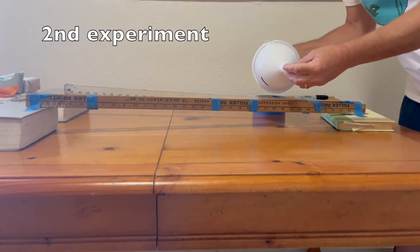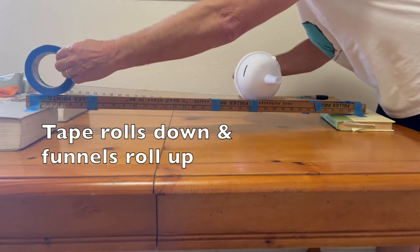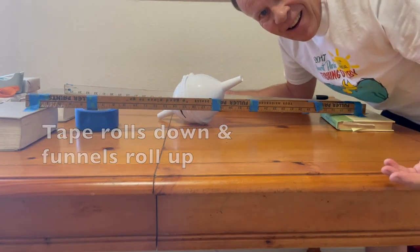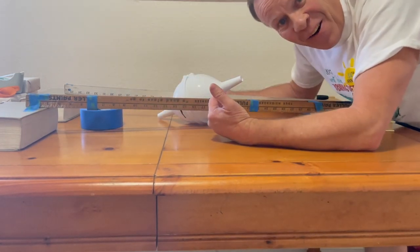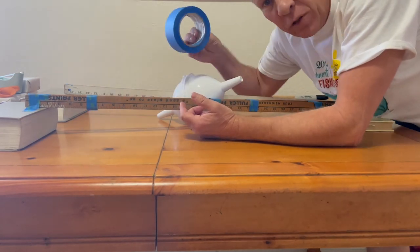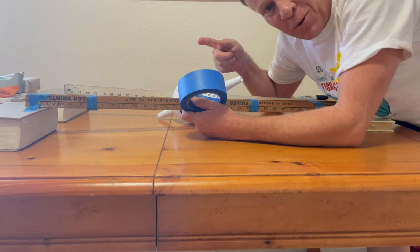So I'm taking my funnels and I'm putting them right here, and then I'm taking this tape and I'm putting it right here. And when I let go, one comes down and the other one's rolling uphill. So as we know all things roll downhill, you saw the tape was rolling down, but the funnel was rolling up.